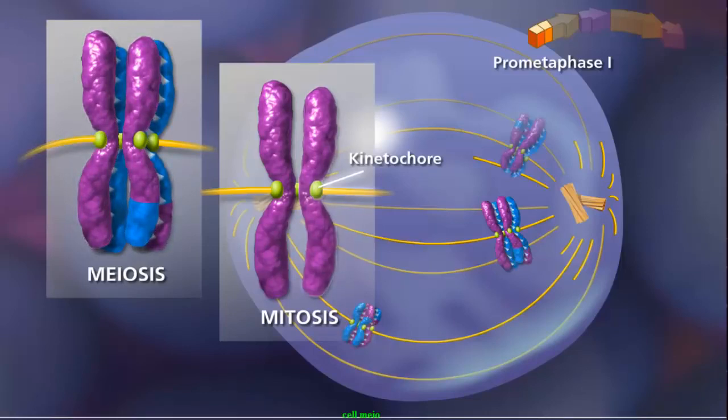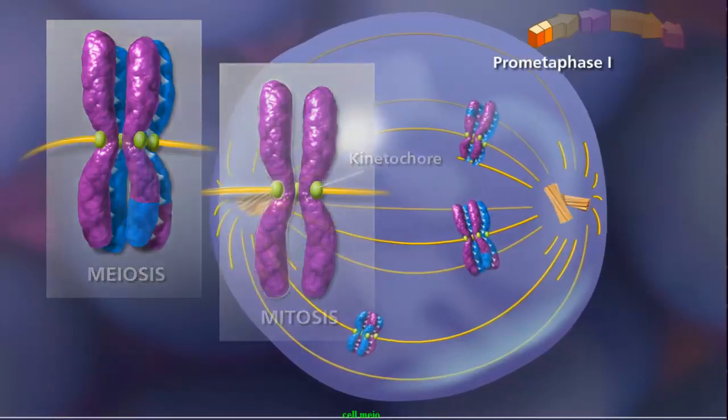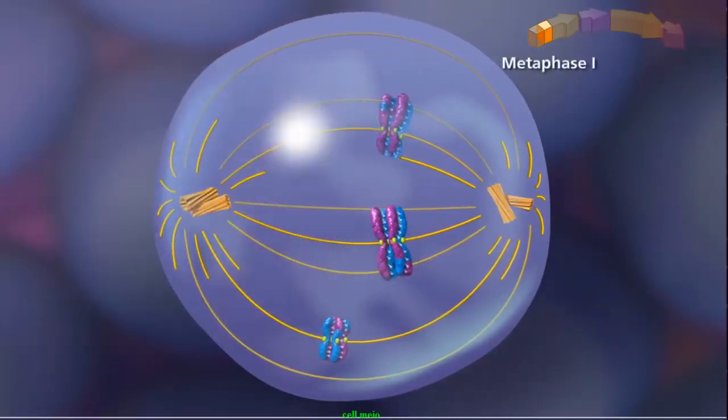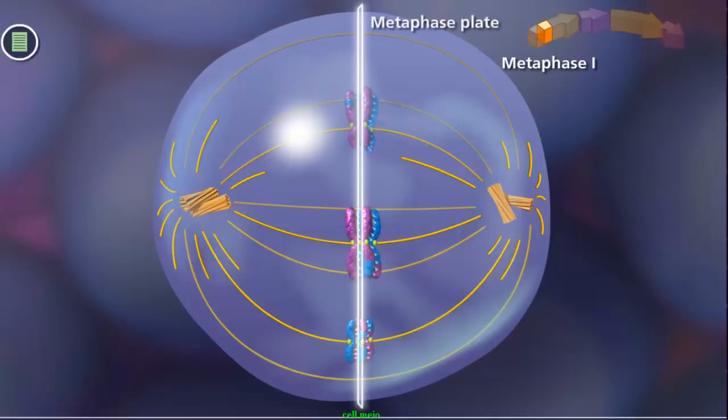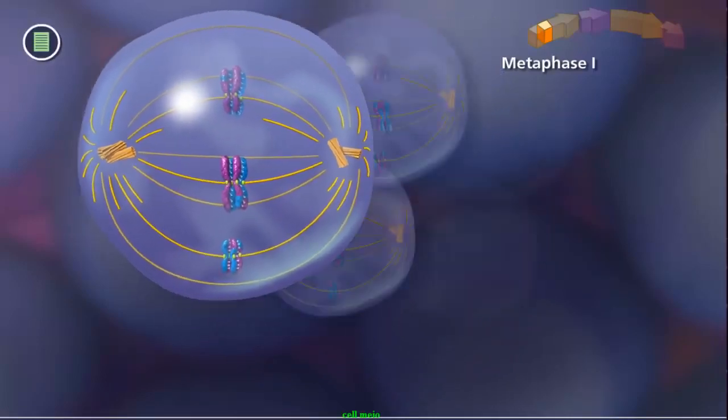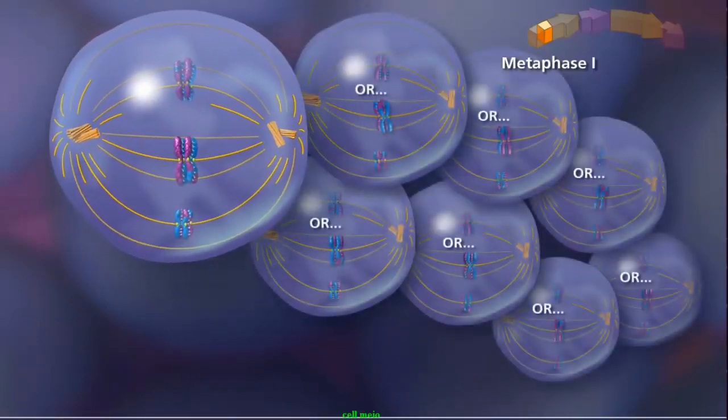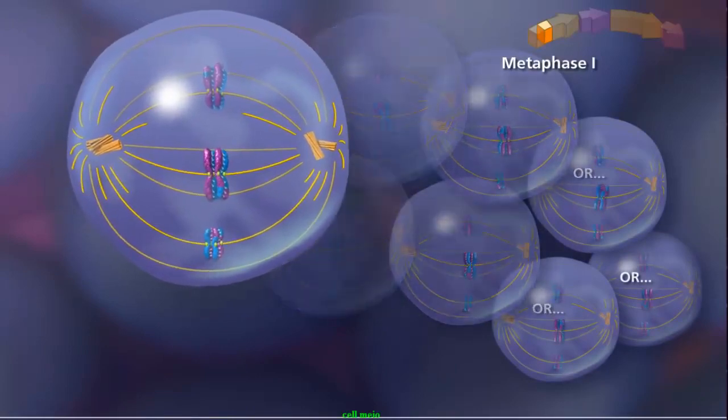In mitosis, each sister chromatid is attached to a spindle fiber. The fibers originate from opposite poles. During metaphase I, bivalents randomly align along the metaphase plate. Due to independent assortment, this alignment is random and adds to genetic diversity.